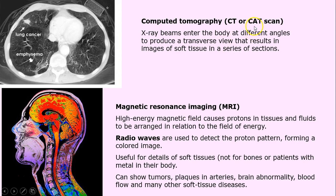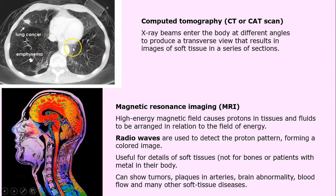Computed tomography, or CT scan — used to be called a CAT scan, which is an older term — still uses x-rays entering the body. We get a transverse view of the body cavity in a series of cross-sectional slices. Here you can see the body cavity in transverse view; lung tissue appears dark since it is not very solid.